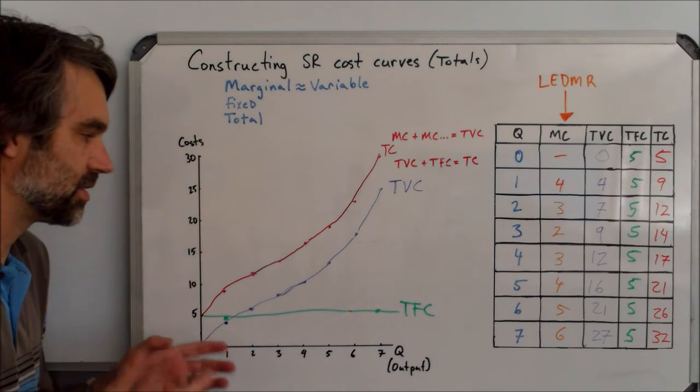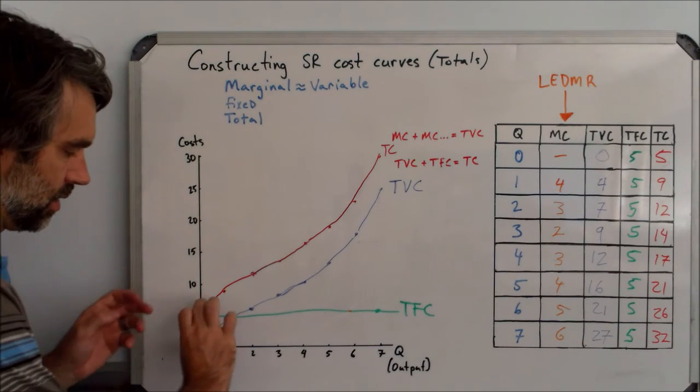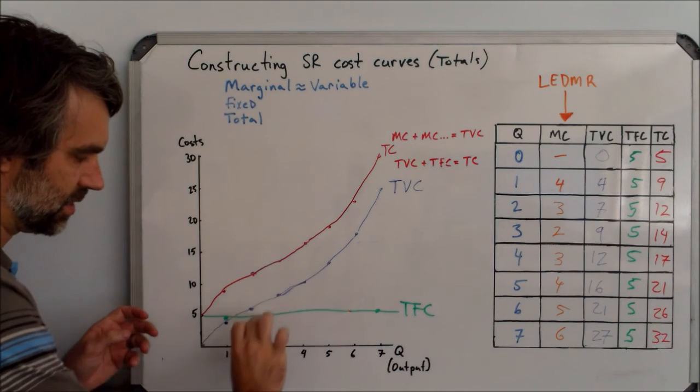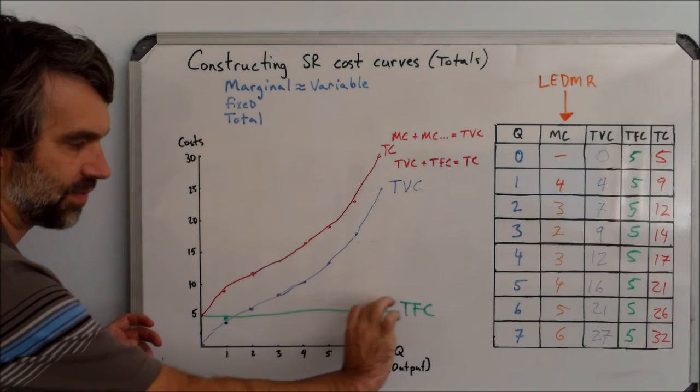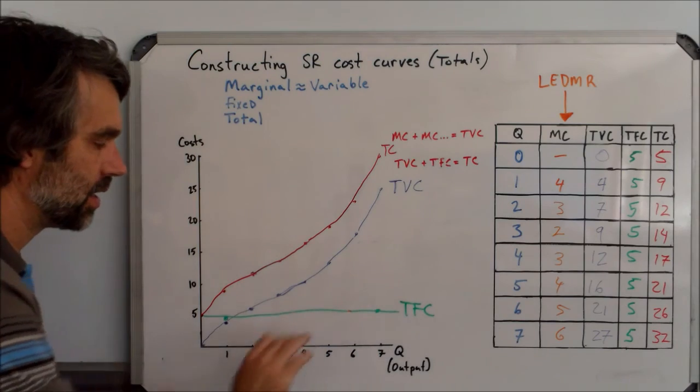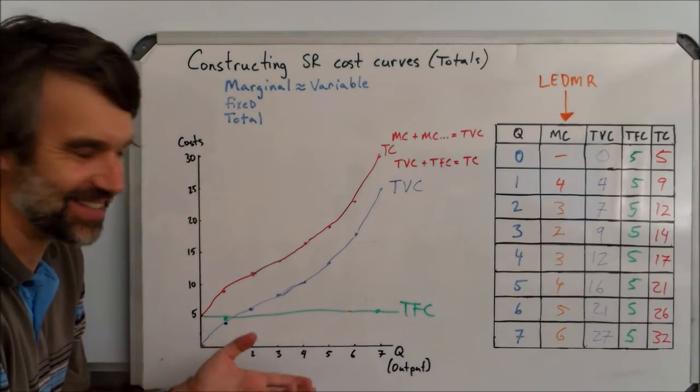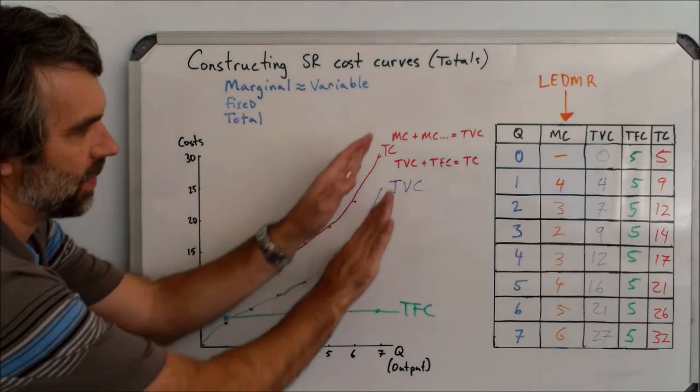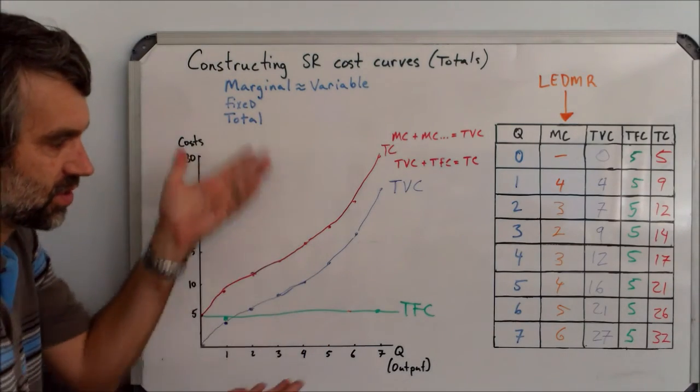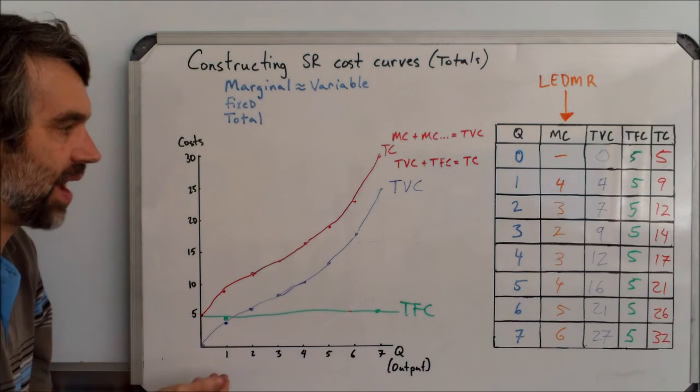A few observations from this diagram. Again, the gap between each of these points is the exact same as the gap of the total fixed costs below it. So these two have the same shape. My drawing isn't that great, but they do. They have the same shape. They'll never touch, of course, because they're separated by the fixed costs, which are five.